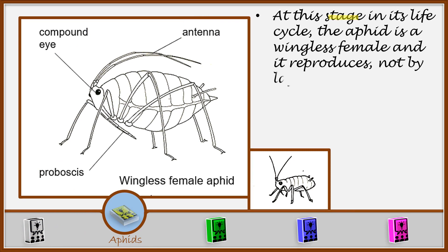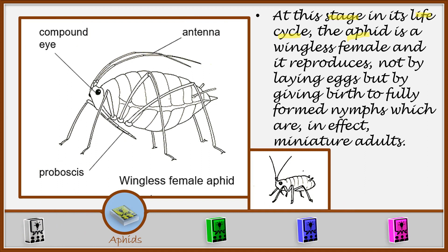At this stage in its life cycle, the aphid is a wingless female and it reproduces not by laying eggs, but by giving birth to a fully formed nymph, which is in effect a miniature adult. So the aphid does not lay eggs — it gives birth to a nymph.